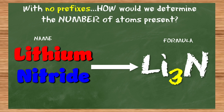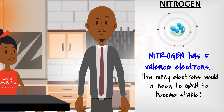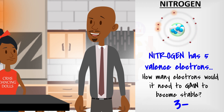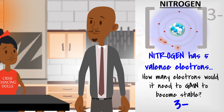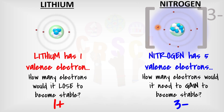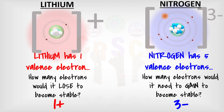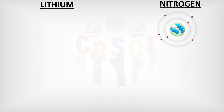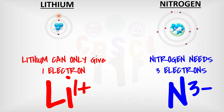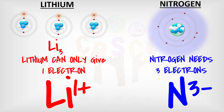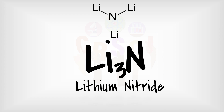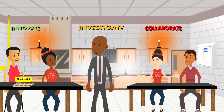Lithium nitride — so if there are no prefixes, how would we know the number of atoms? It goes back to the formation of ions and their desire to be stable. Nitrogen has five electrons and needs to gain three to be stable, giving it a charge of negative three. Lithium has one valence electron and prefers to lose just one — we call these oxidation numbers. Since nitrogen needs three electrons and lithium only has one to give, it takes three lithium atoms to stabilize one nitrogen. You can cross the oxidation numbers and bring them down as subscripts — yes, absolutely.